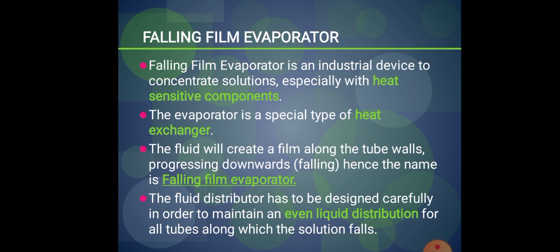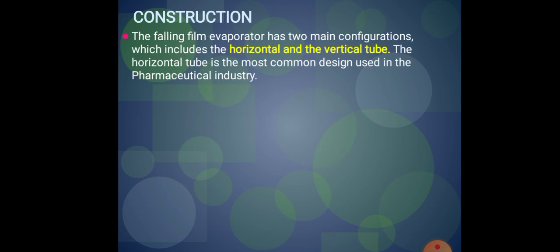In this falling film evaporator, there is creation of a film on the surface, and that film runs downward — that is why it is called a falling film evaporator. This evaporator has construction such that liquid is uniformly distributed for all tubes as the solution falls. The evaporator has two configurations: horizontal tube configuration and vertical tube configuration.